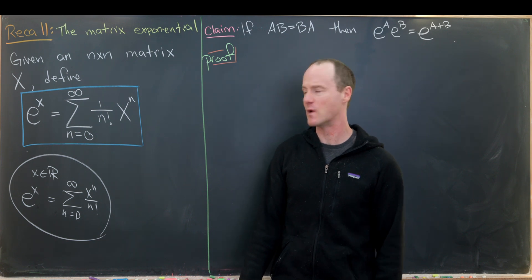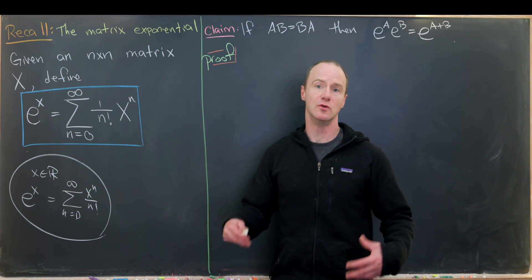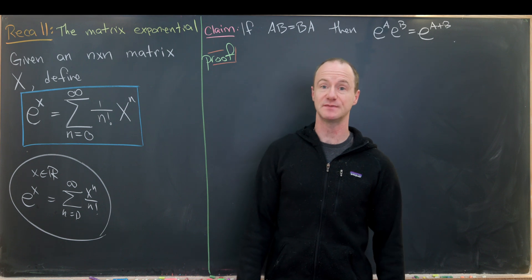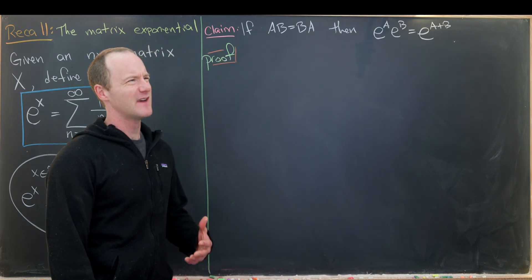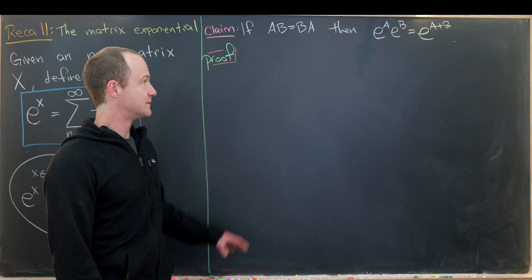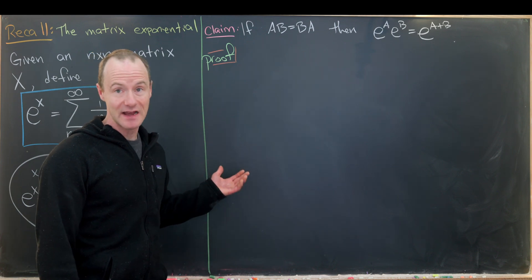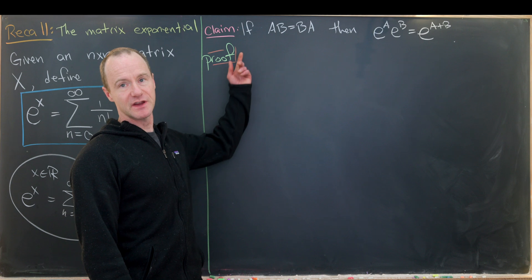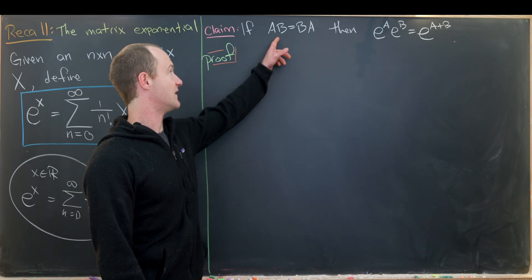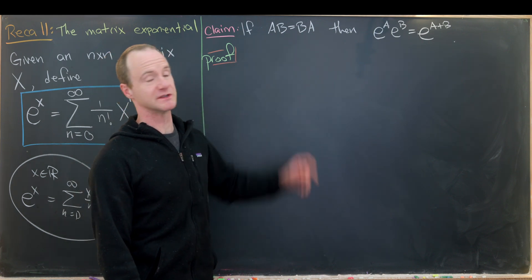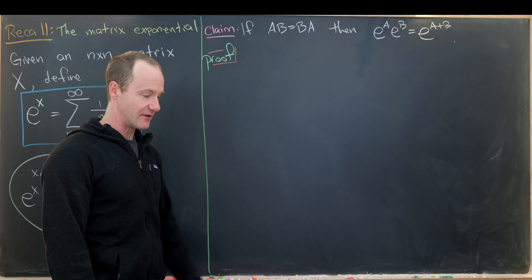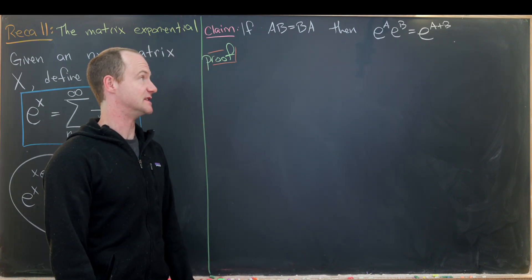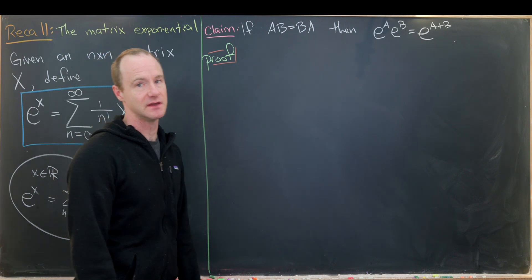You might ask: do normal exponent rules work with matrix exponentiation? In fact, not quite — they kind of work, but only in special cases. In particular, today we will prove that if AB equals BA — in other words, we have commuting matrices — then e to the A times e to the B is equal to e to the A plus B.